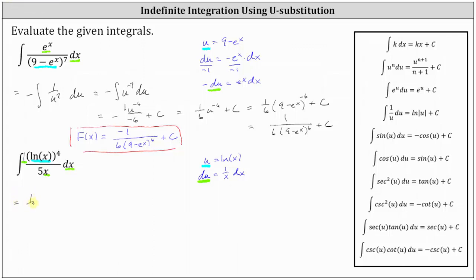So let's first factor out the 1 fifth — we have 1 fifth times the integral. The numerator is now u to the fourth, and 1 divided by x dx is now just du. Integrating with respect to u, we have 1 fifth times u to the fifth divided by 5, plus c, which equals 1 twenty-fifth u to the fifth. But u is really natural log x, giving us 1 twenty-fifth times the fifth power of natural log x, plus c.